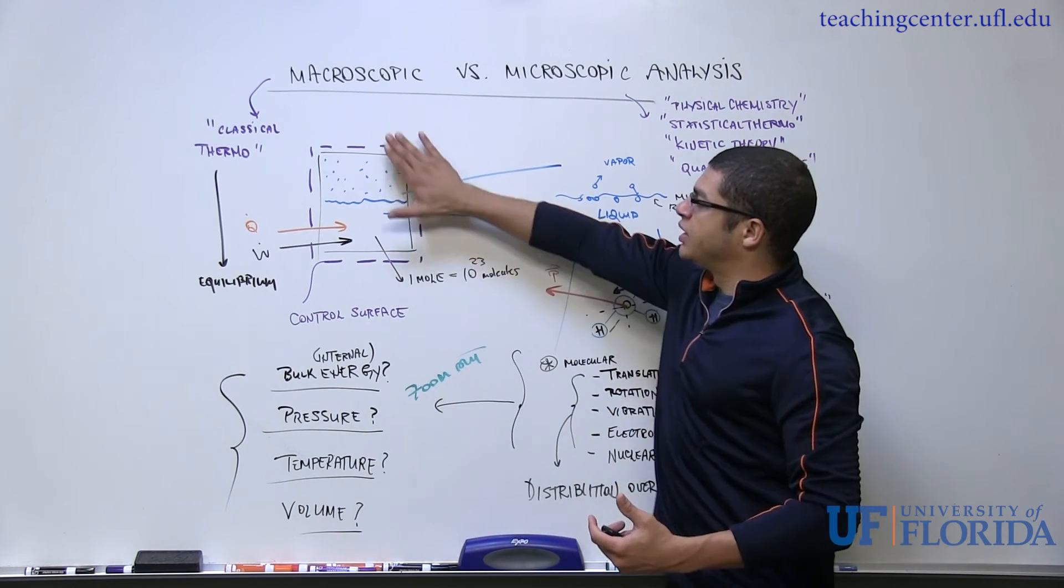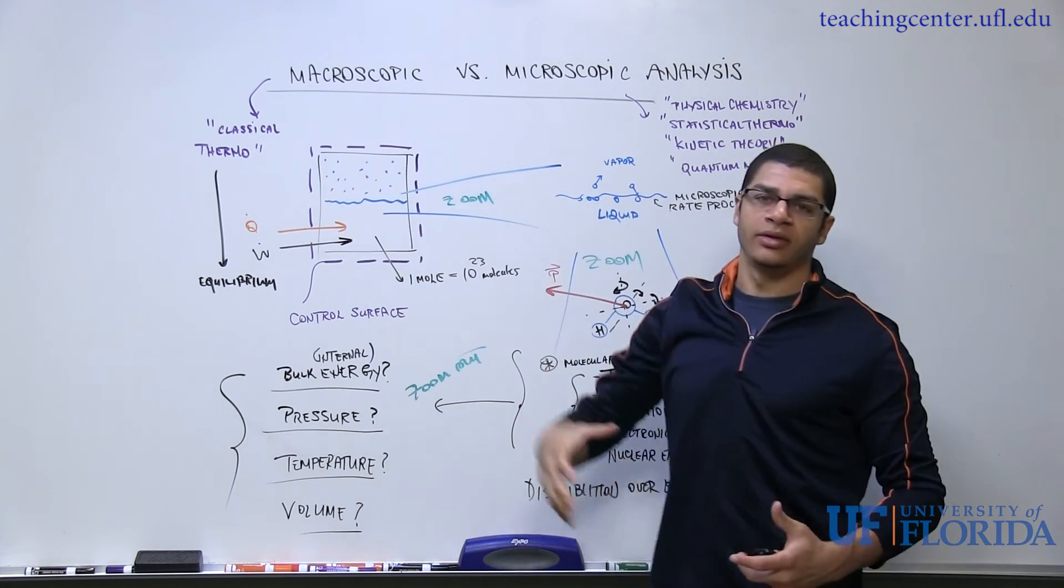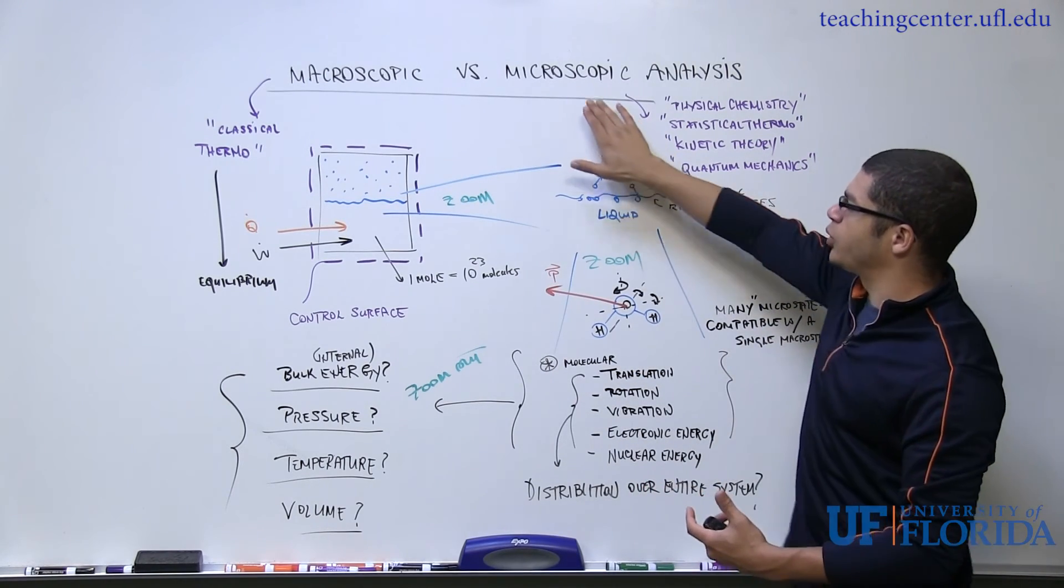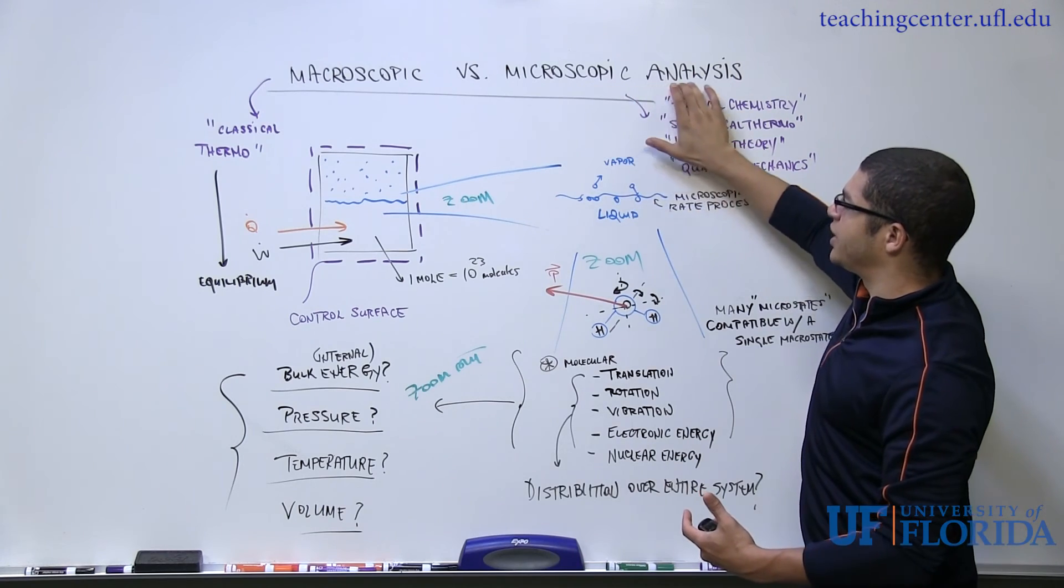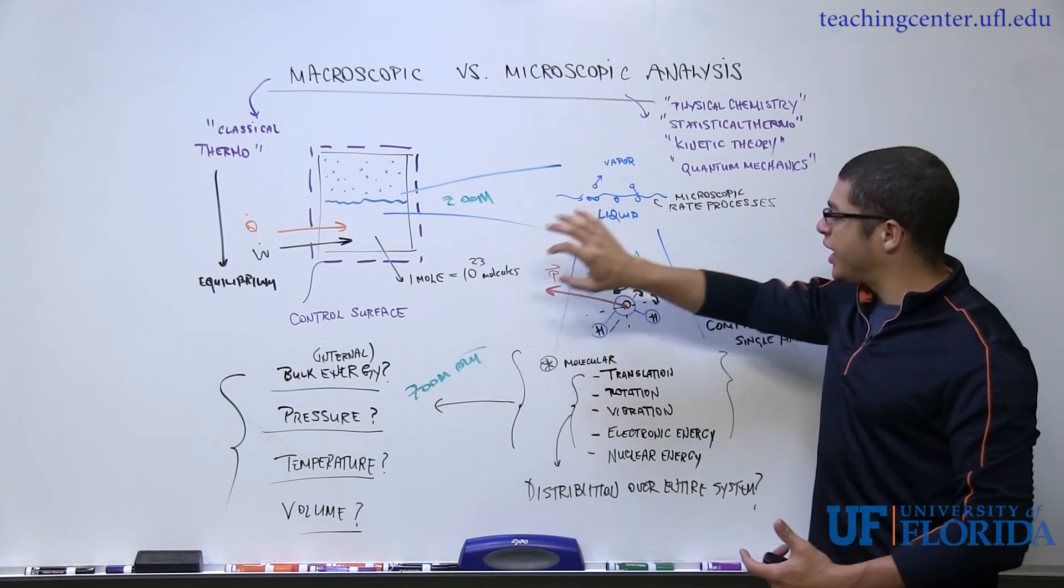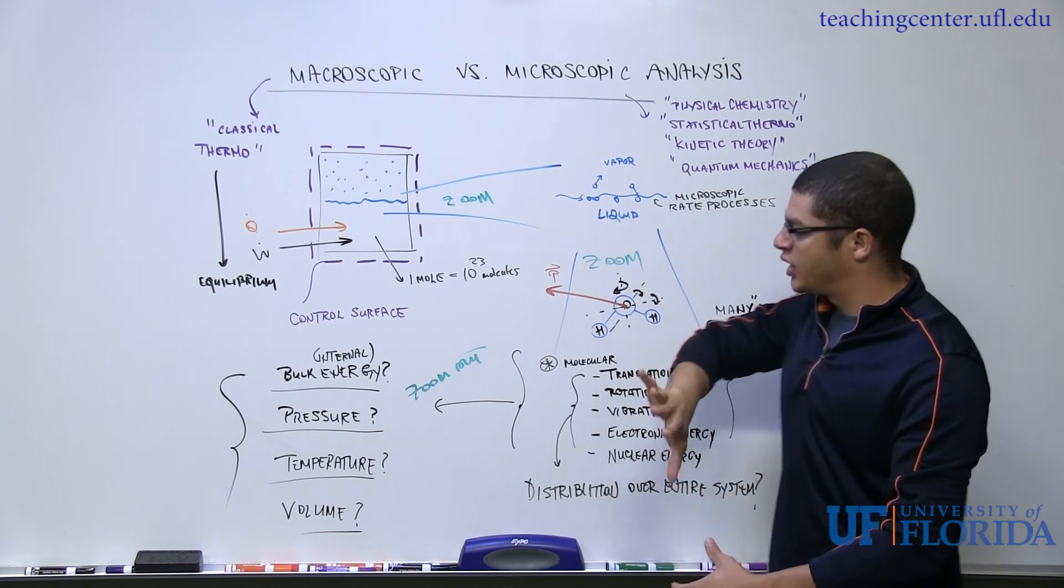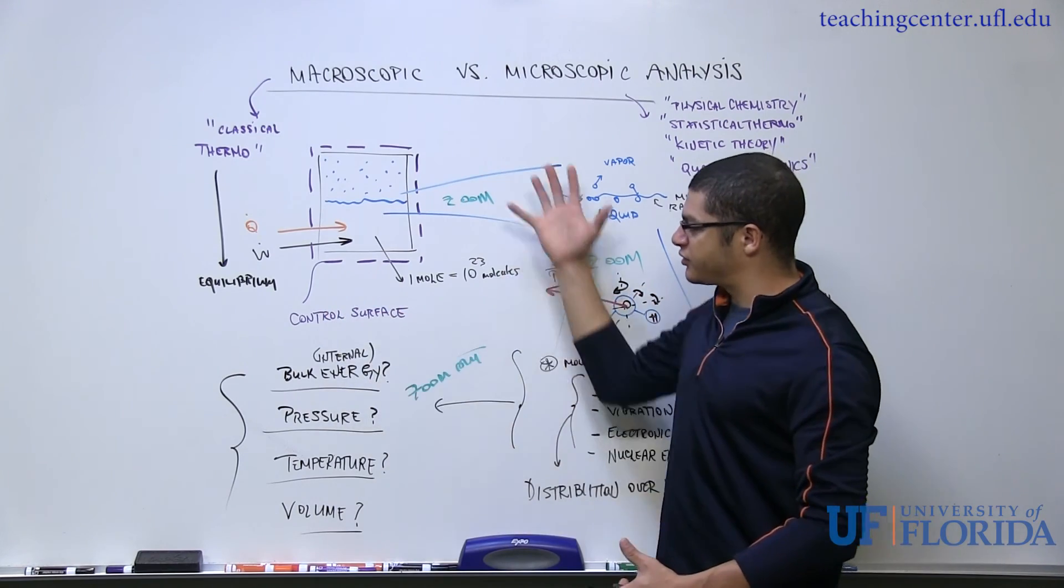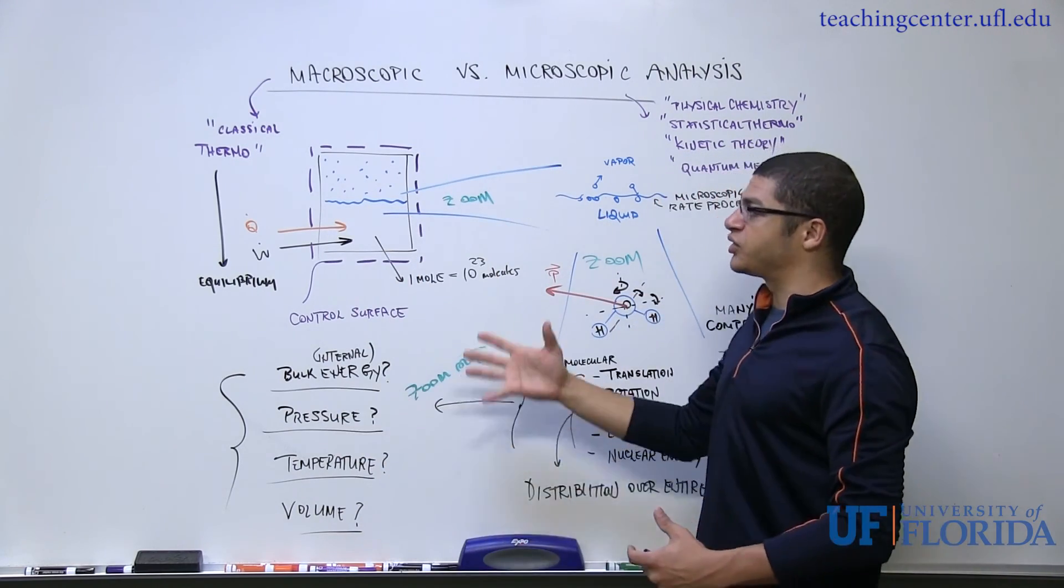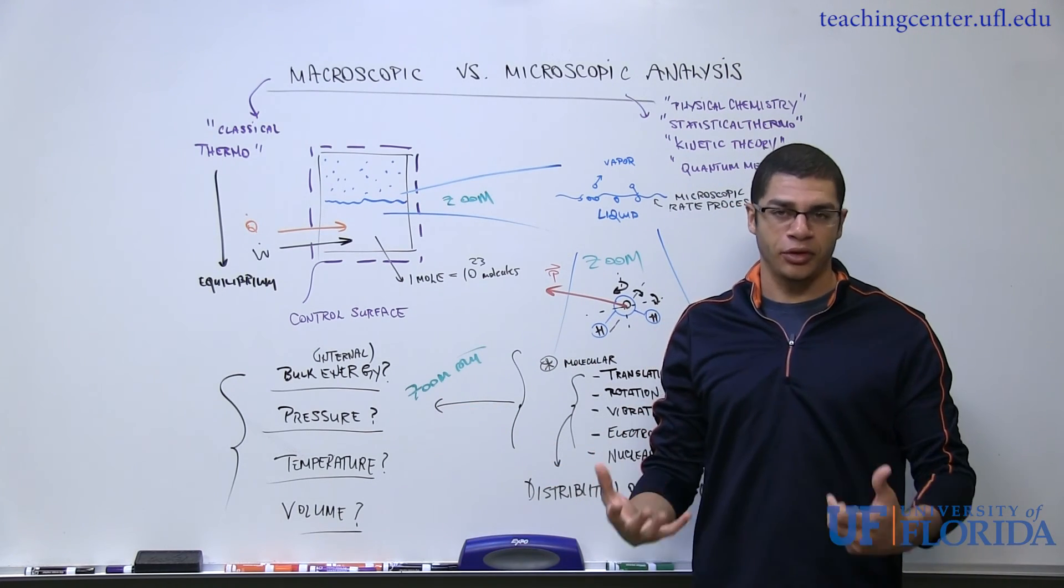To recap, classical thermodynamics deals with macroscopic properties and macroscopic analyses, whereas these other subjects deal with a microscopic analysis of the same thermodynamic system. There are tools to bring us from the microscopic approach back to the macroscopic approach. This is a bit simpler, and we can do back of the envelope calculations using classical thermodynamics for macroscopic systems and get very good results.